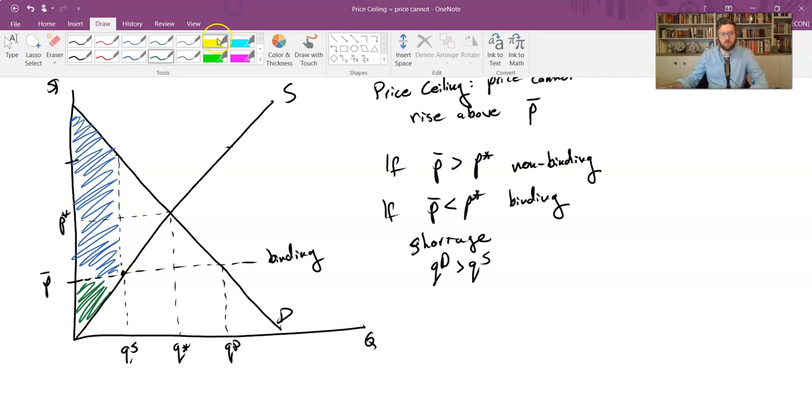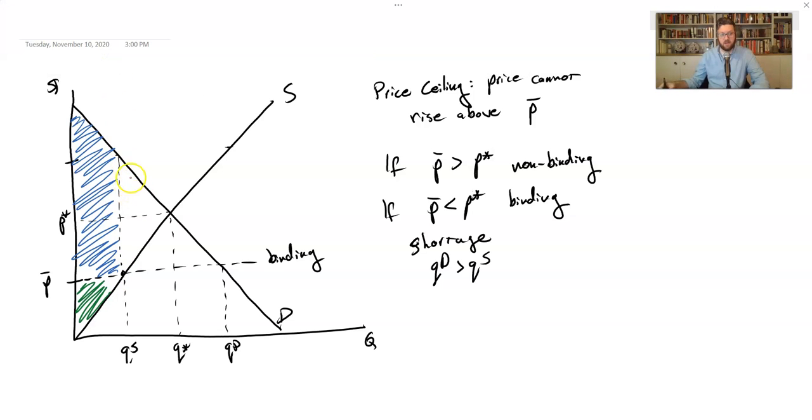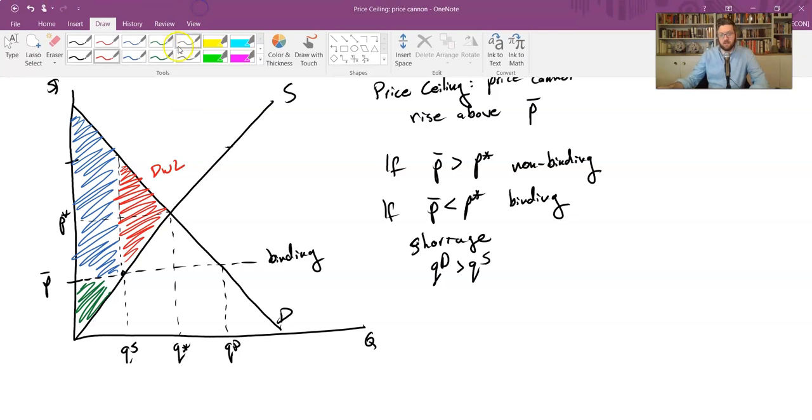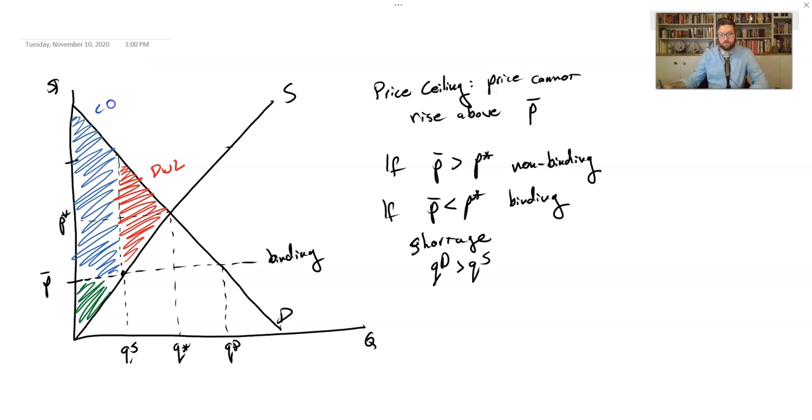We also have deadweight loss because this region consists of transactions that we would like to happen, but they're not happening. The price ceiling prevents them from happening. Basically, these people want to pay a price higher than they're allowed to, and the firms would have been willing to take that price if they could get it. But the government has intervened and said you're not allowed to charge that price.